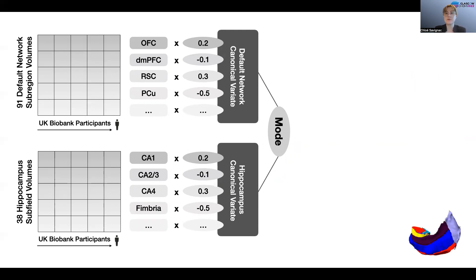to identify the sources of common population variation between the full set of 38 hippocampus sub-regions and that of the 91 default network sub-regions. This algorithmic approach finds principal signatures of structural covariation, or modes, between two sets of variables.